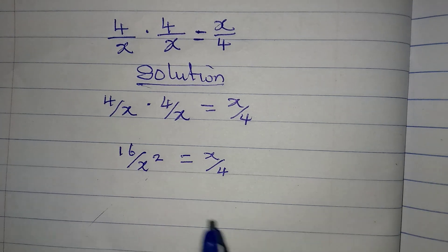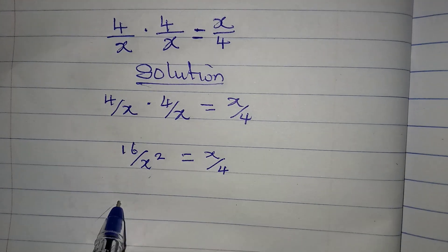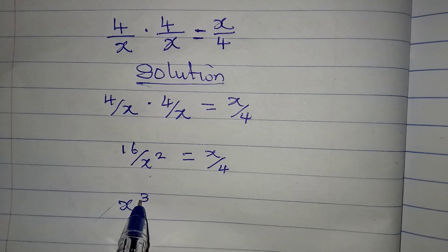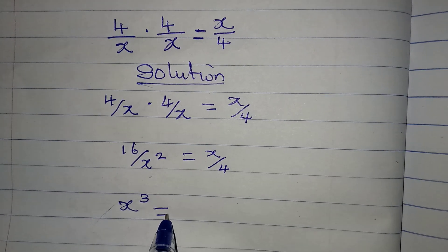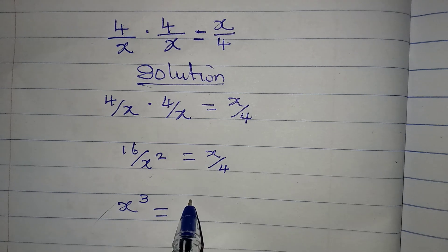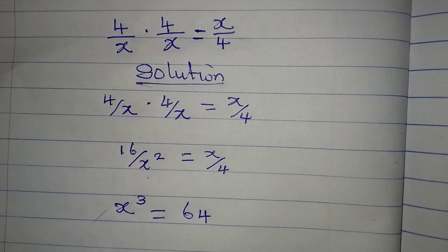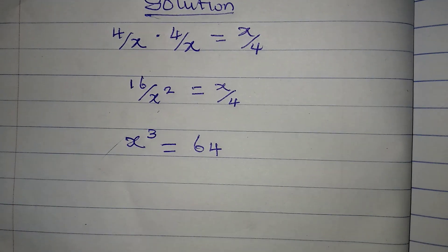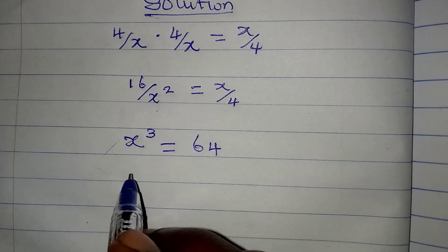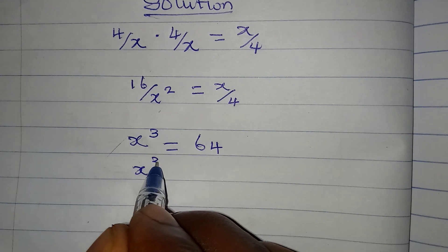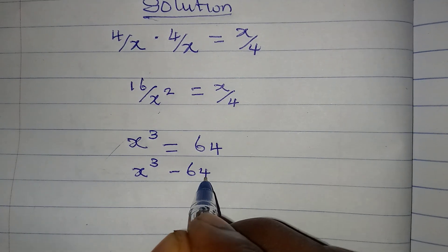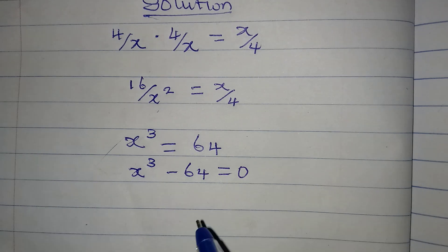At this point we cross multiply so that we have x squared times x to give x to the power of 3, equal to 4 times 16 to give us 64. Now let's proceed — bring everything to the left-hand side, so we have x to the power of 3 minus 64 equal to 0.